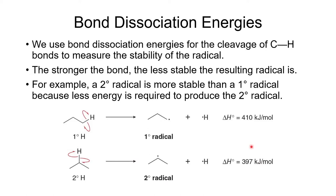One important note: we never actually carry out the reaction of forming a carbon radical and a hydrogen radical experimentally, because the hydrogen radical is extremely difficult to form and only appears in very high-temperature situations. These BDE values are determined by adding together delta H values from other radical reactions, and they tell us how strong each bond is and how stable the resulting radicals are.